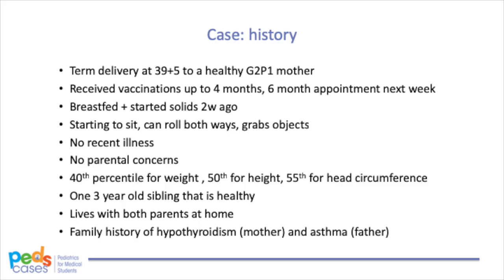Let's start with the case. You're a medical student on your pediatric rotation at a community clinic, asked to do a well-child check on a 6-month-old male. You start with the history. He was born via uncomplicated delivery at 39 weeks and 5 days to a healthy G2P1 mother. He received his vaccinations up to 4 months. He is breastfed and started solid food 2 weeks ago. He's starting to sit, can roll both ways, grasp objects, and has started babbling, with no recent illnesses or parental concerns.